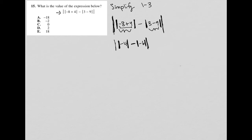The absolute value of negative four is positive four. So I no longer need those absolute value signs because they've done their job — turning that negative four into a positive four. Then I have my minus sign, and the absolute value of negative six is positive six, so I no longer need to write that absolute value either.